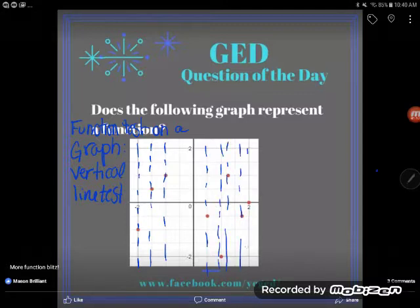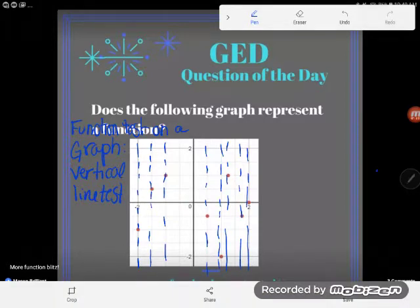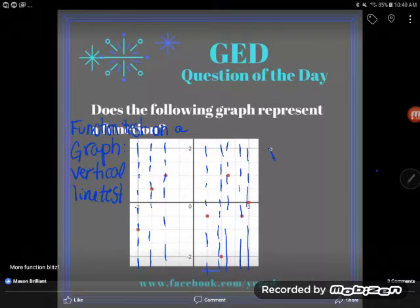Only one point here, here, here, here, and here. On this entire graph, no matter where I drew my vertical line, I could never catch the same x at more than one point. Okay, because of that, this is a faithful function. All my x's are faithful, and so this is a function. So does the following graph represent a function? Yep, it sure does.